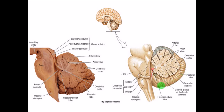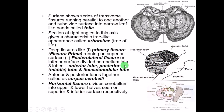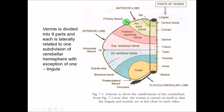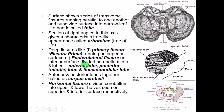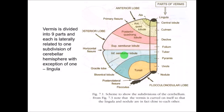The second deep fissure is called the posterolateral fissure, which separates the posterior lobe from an additional small lobe called the flocculonodular lobe. So there are three lobes: the anterior lobe, the posterior lobe (sometimes called the middle lobe), and the flocculonodular lobe. The anterior and posterior lobes are separated by the fissura prima, and the posterolateral fissure separates the posterior lobe from the flocculonodular lobe.